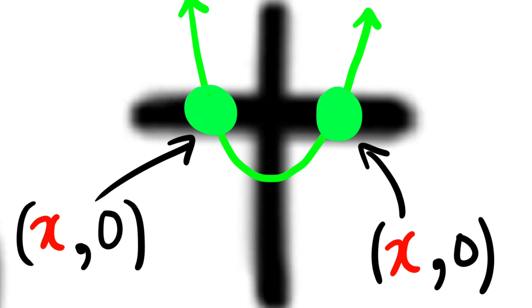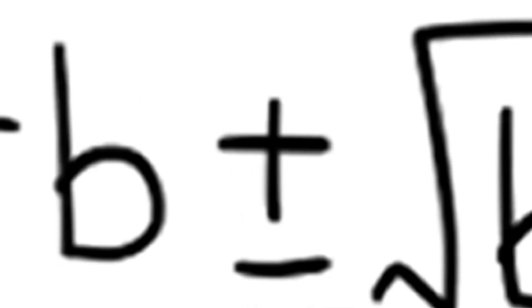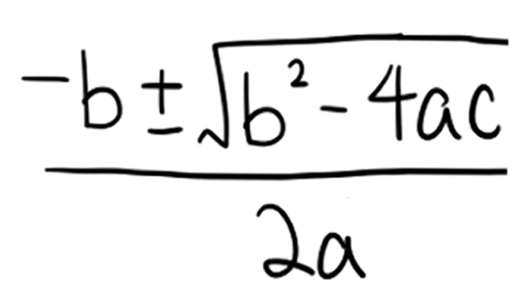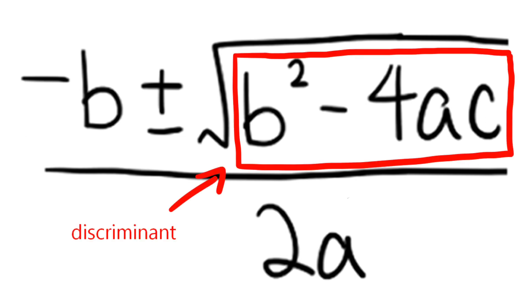The quadratic formula also tells us how many x-intercepts there are based on the discriminant. The discriminant of a quadratic formula is the value inside the square root, which is b squared minus 4ac.